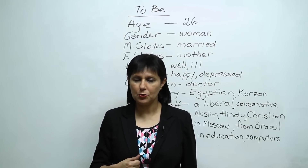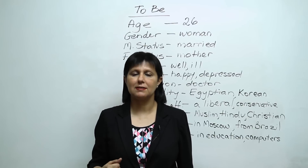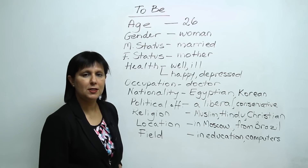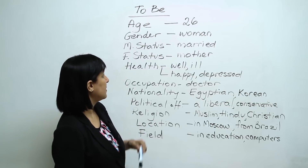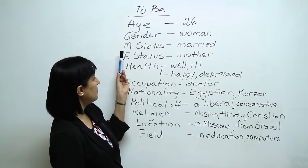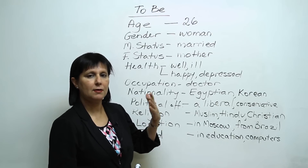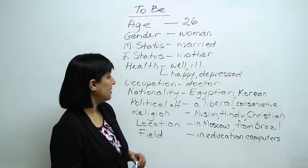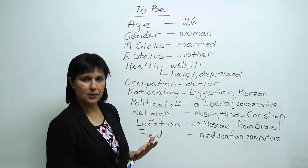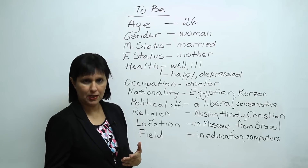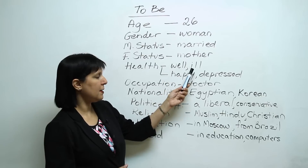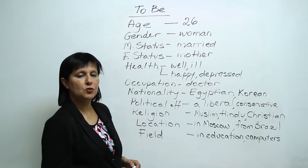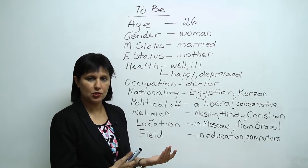So let me explain when we use the verb 'to be' — there are many different contexts. We use it to talk about age: 'I am 26.' About gender: 'I am a woman.' About marital status: 'I'm married,' 'I'm engaged,' 'I'm divorced,' 'I am separated.' Family status: 'I am a mother,' 'I'm a father.' Also your health — physical and mental or emotional: 'I'm well,' 'I'm ill,' 'I'm happy,' 'I'm depressed.' And your occupation: 'I'm a doctor,' 'I'm a teacher.'